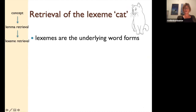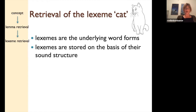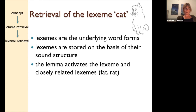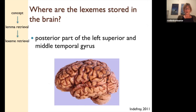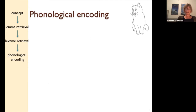Once you have retrieved the lemma, the next step is to retrieve the underlying word form. These are also called lexemes — the underlying word forms. They are probably stored on the basis of their sound structure. The lemma activates the lexeme, and you get the same idea of activation, co-activation, inhibition. Closely related lexemes like 'fat' and 'rat' are co-activated, then inhibited, and the lexeme 'cat' wins. According to Indefrey, the lexemes are stored in the left superior and middle temporal gyrus and the posterior part — Wernicke's area basically.